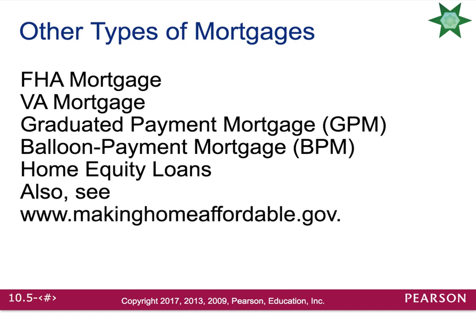Today we only talked about conventional mortgages and ARMs, but there are several other mortgages out there: FHA mortgages, which are typically used by first-time homebuyers; VA mortgages, which are used for veterans; graduated payment mortgages; balloon payments; and home equity loans, among others. If you want to check out all the different types of mortgages, you can visit makinghomesaffordable.gov.